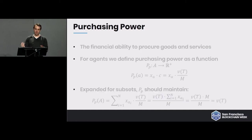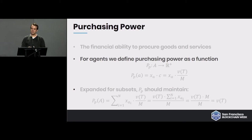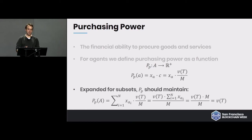This leads us to the purchasing power function, defined as the financial ability to procure goods and services. For an agent, purchasing power is that agent's account (denoted X_A) times the coin's proportional value C. When you expand that for all agents in the system, the purchasing power of all agents equals the entire value of goods and services — everyone's purchasing power sums to the total wealth in the system.